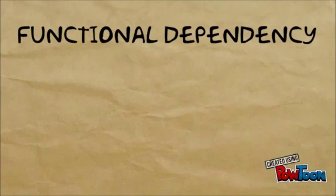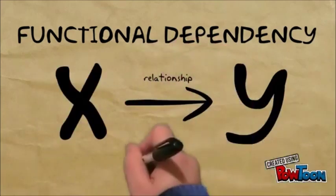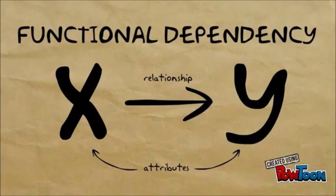Functional dependency is the relationship between two attributes from a relational database, which is noted by this figure, read as x determines y.